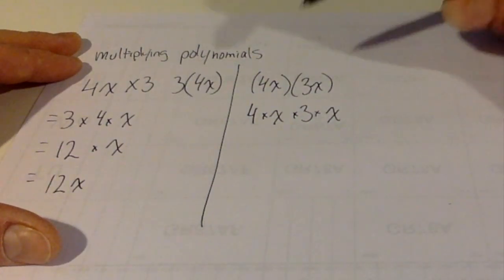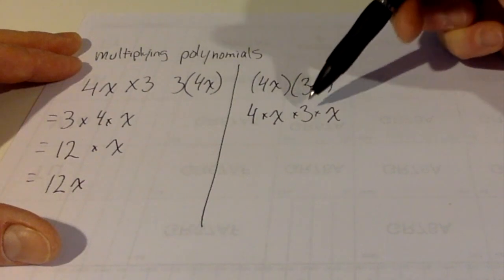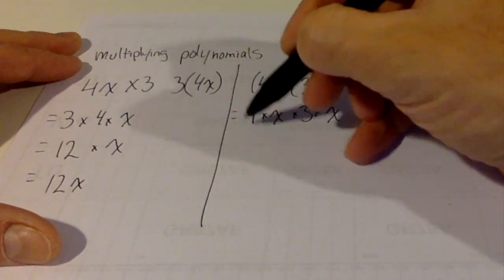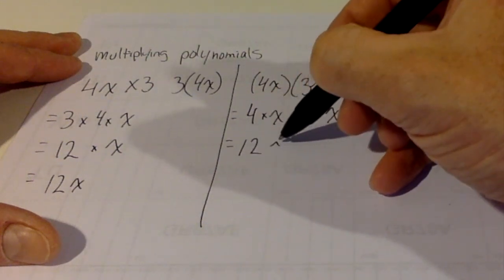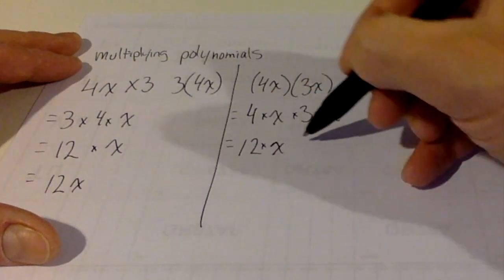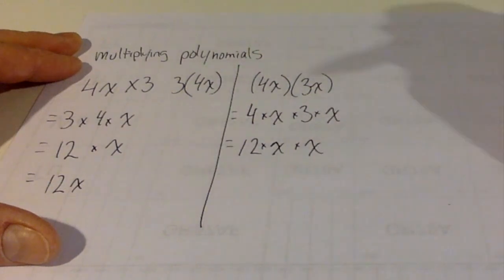What you want to do is bundle the actual numbers together. 4 times 3 is 12 times x times x.